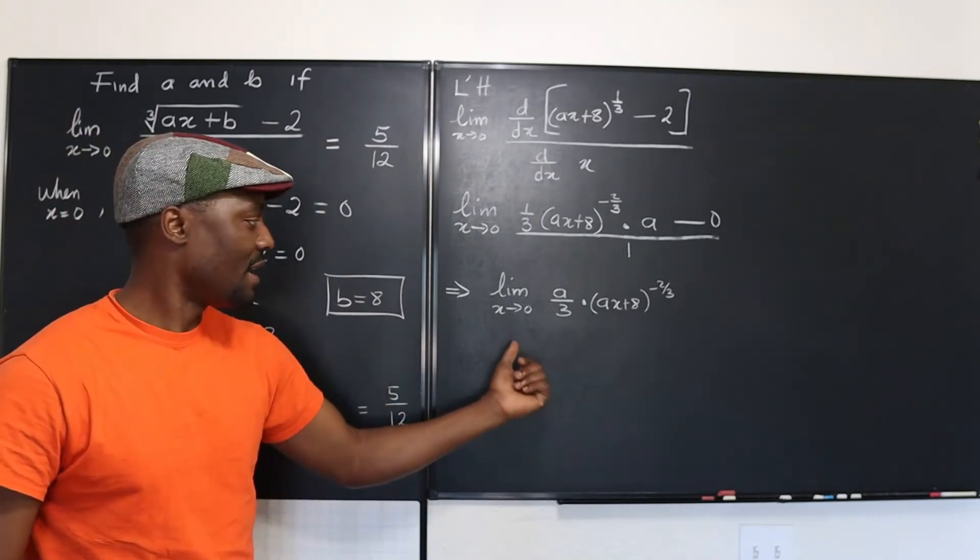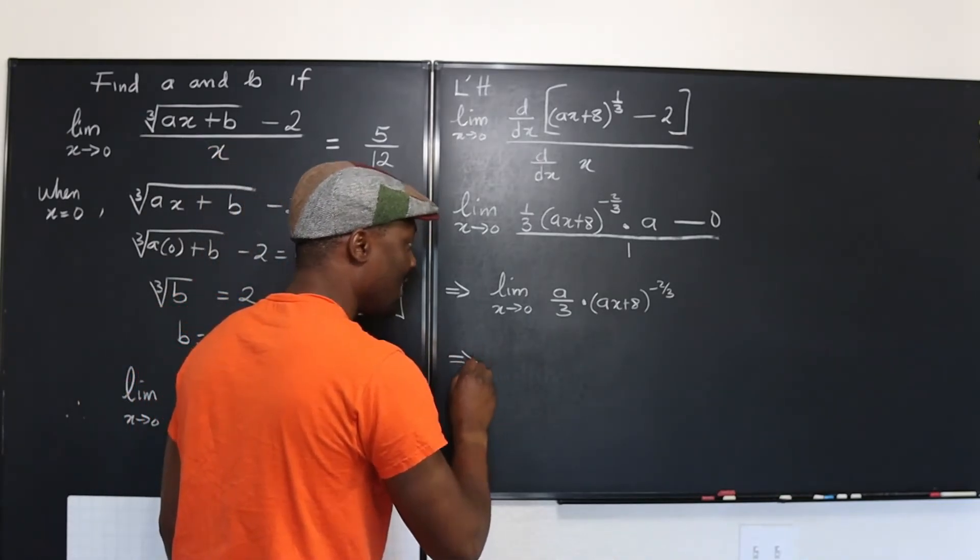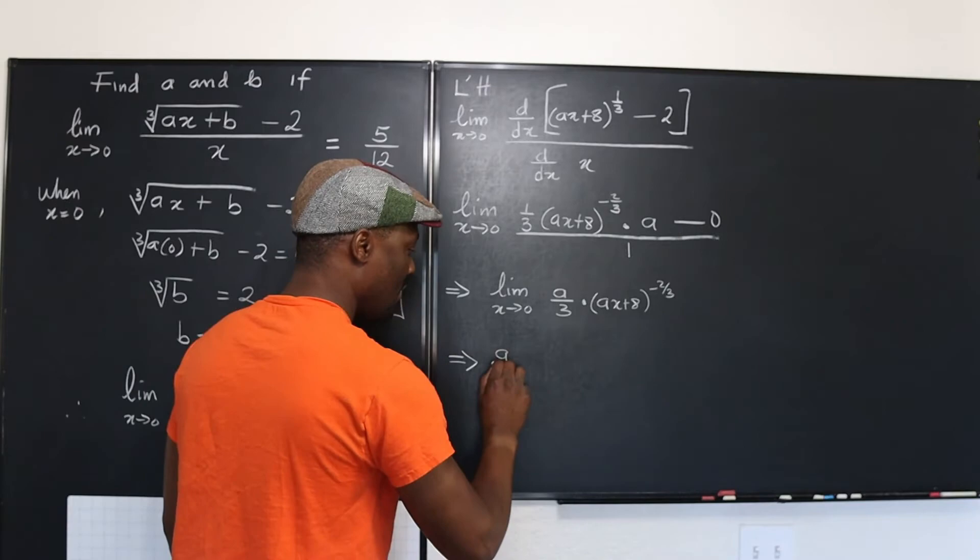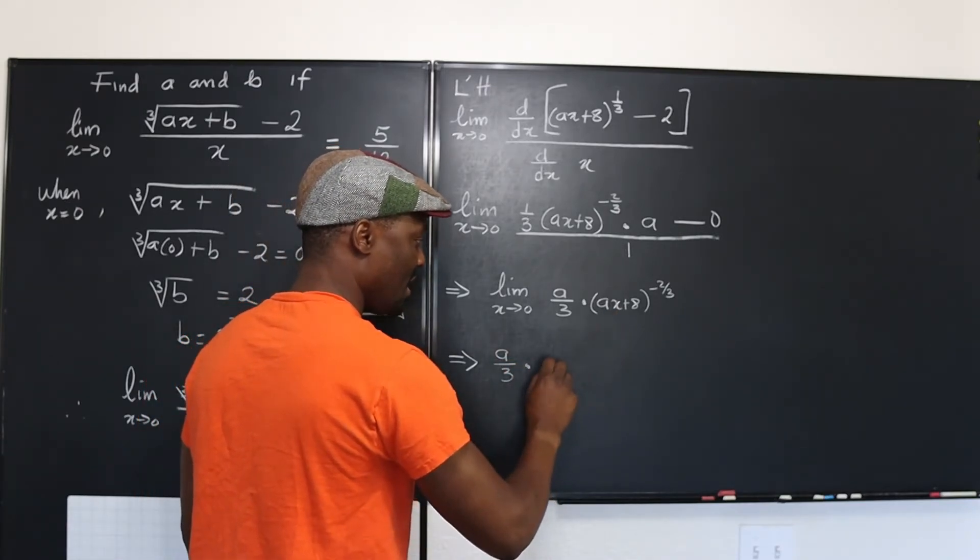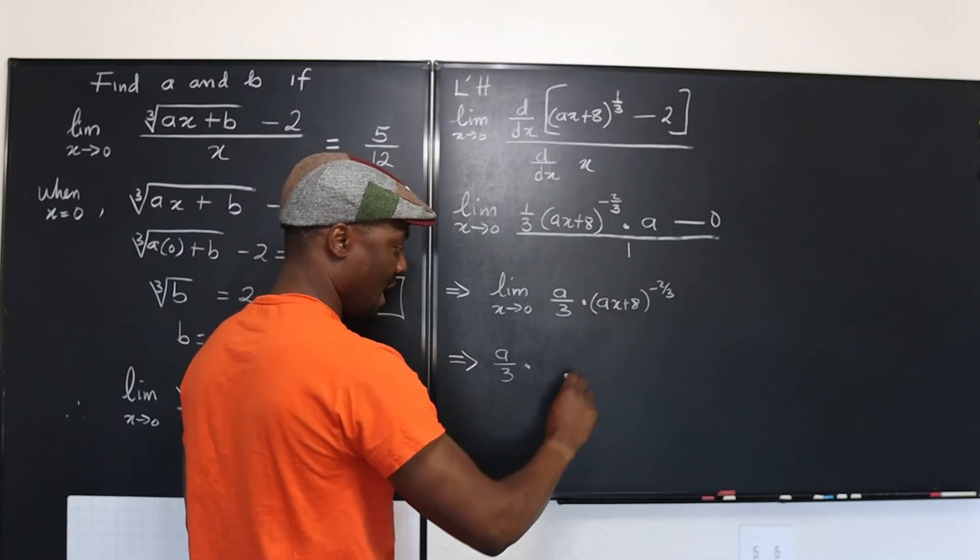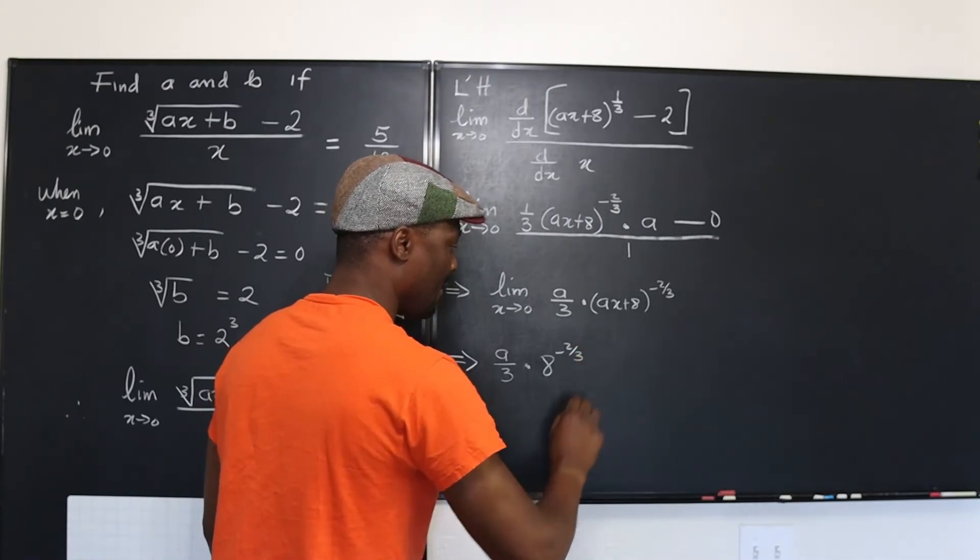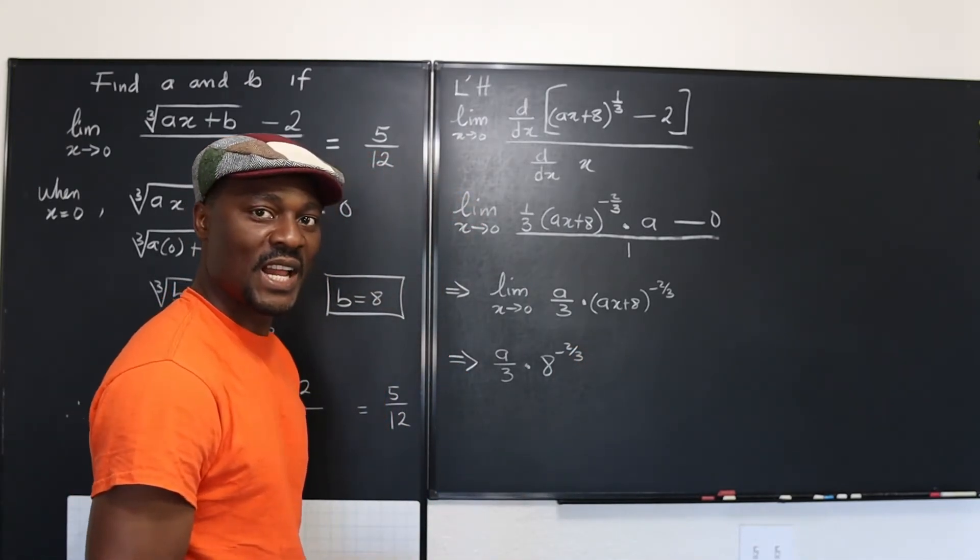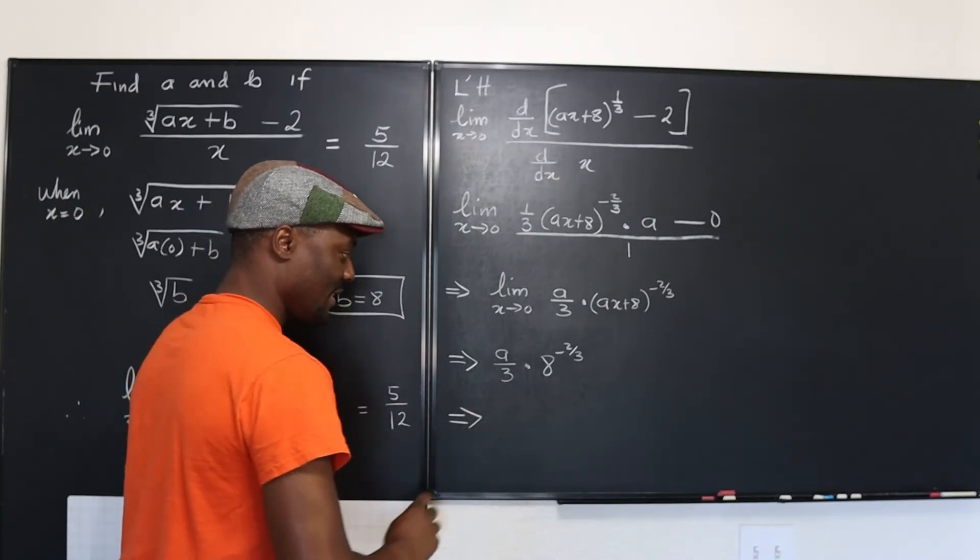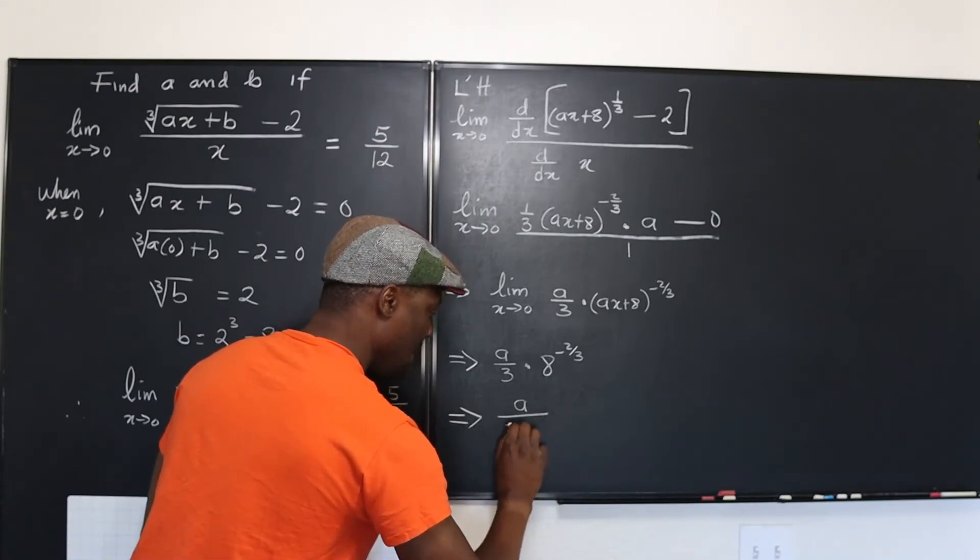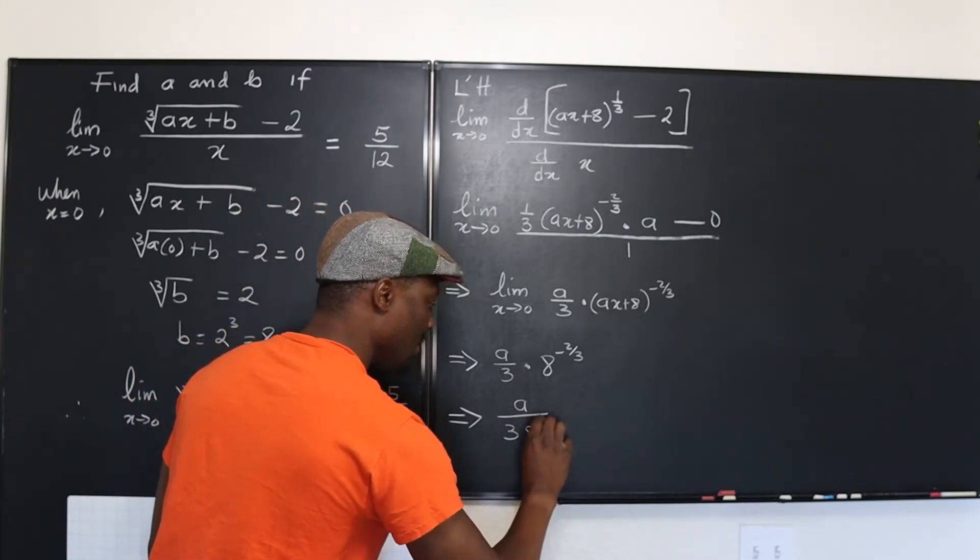Okay, so let's take the limit by substituting x equals zero. Well, this is going to lead us to A over three times. This is going to be zero because x is zero plus eight. So it's just going to be eight to negative two over three. Well, what does that look like? That looks like this. It looks like A over three times eight raised to two thirds.